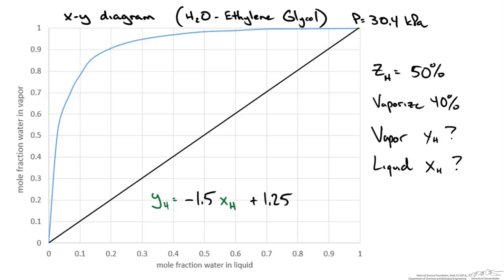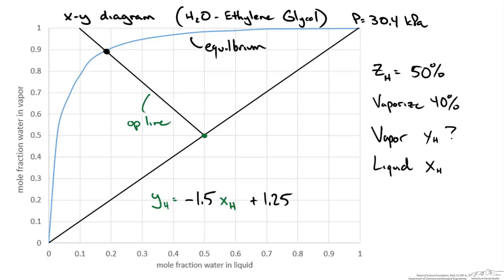Plugging in x_H = 0.5 gives y_H = 0.5, confirming one point lies on the y = x line. Drawing our operating line with slope −1.5 and intercept 1.25, where it intersects the equilibrium curve is our solution: the liquid composition x_H is approximately 0.18 and the vapor composition y_H is approximately 0.9.